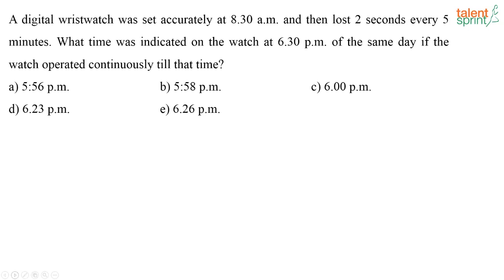A digital wristwatch was set accurately at 8:30 AM and then lost two seconds every five minutes. What time was indicated on the watch at 6:30 PM of the same day, if the watch operated continuously till that time? How will we approach this?